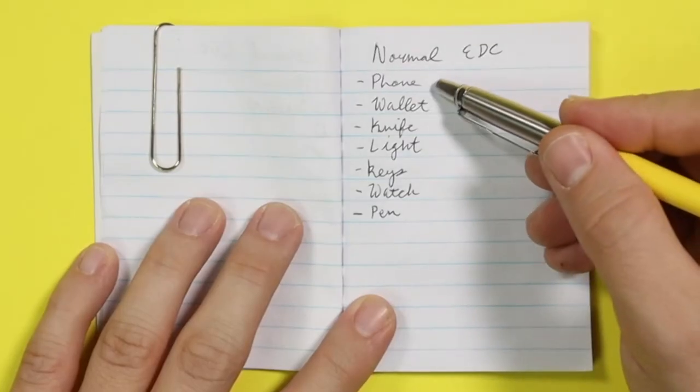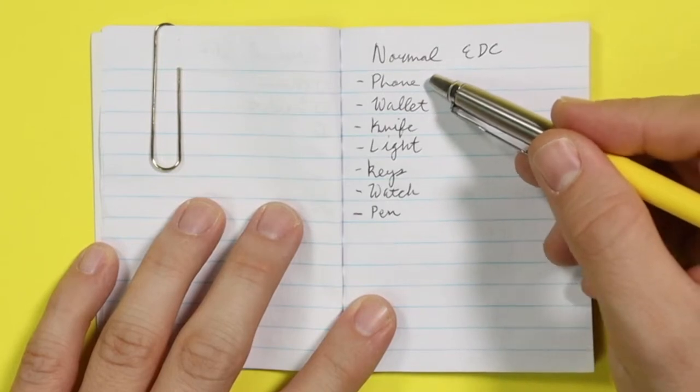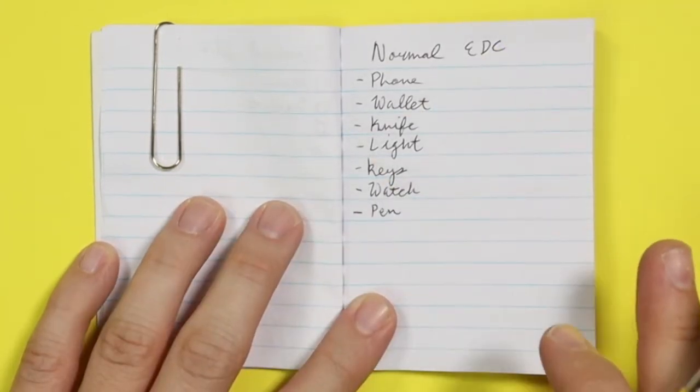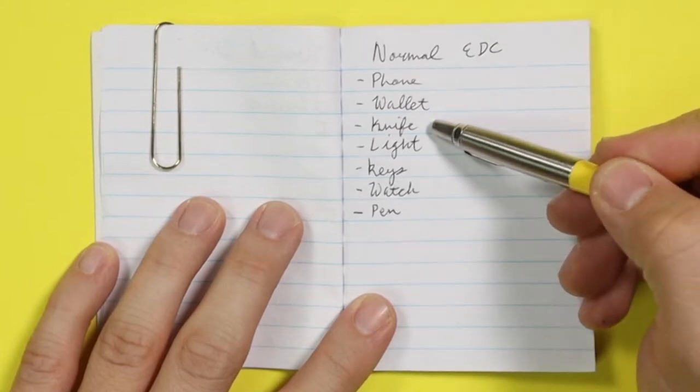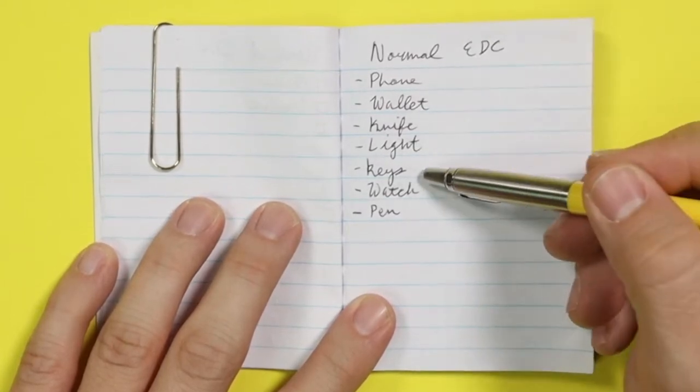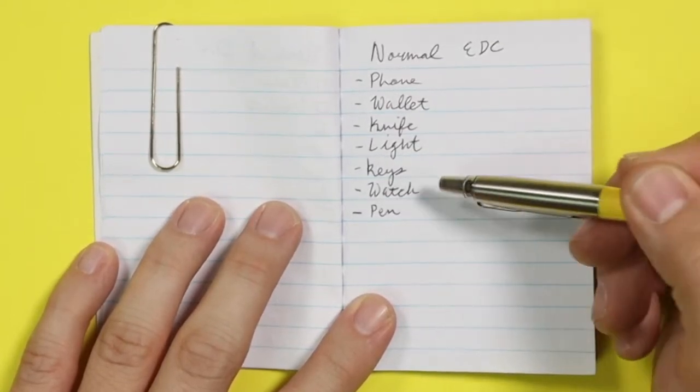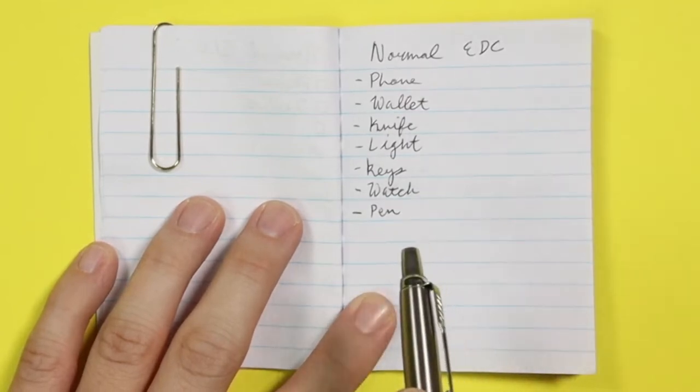The most important and useful item is going to be the cell phone because it does so much. Then you have a wallet, a knife, a light, keys and your key organization, a watch, and a pen.